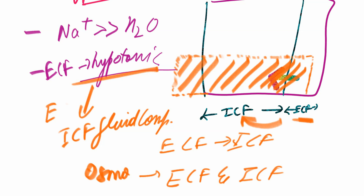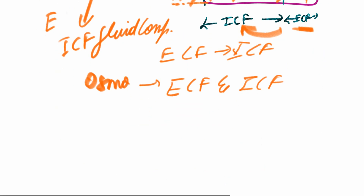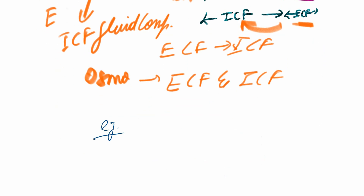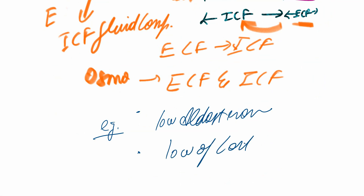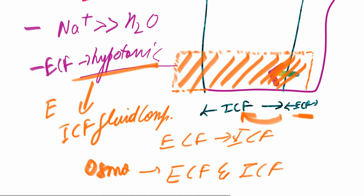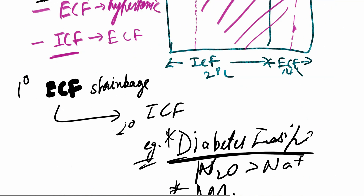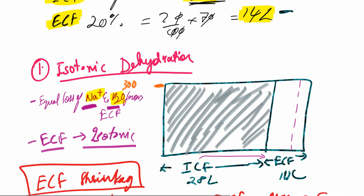Examples of hypotonic dehydration: low aldosterone production in the body due to adrenal cortex abnormalities or adrenal disease, and secondly, low levels of cortisol. This was all about the types of dehydration.